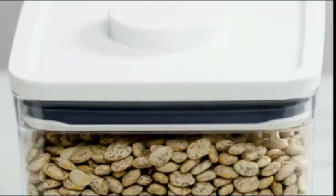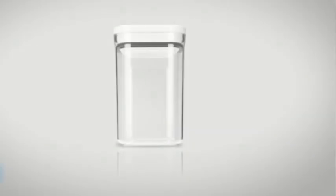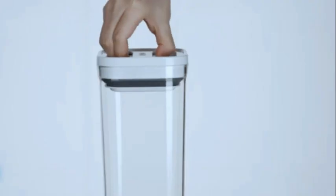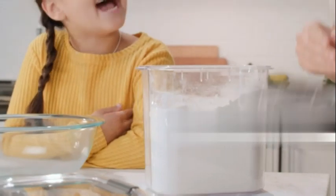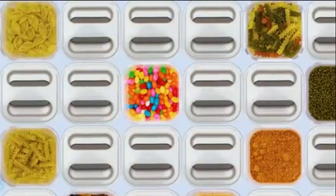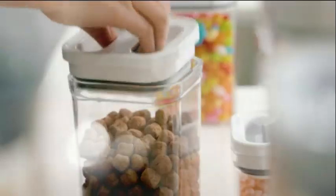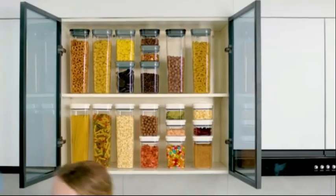The 4.5 liter capacity of this container is generous and allows for ample storage space. Whether you need to store large quantities of pasta, rice, or other dry goods, or prefer to utilize it for bulk meal prepping, this container is up to the task. Its rectangular shape also makes it easy to stack and maximize storage.